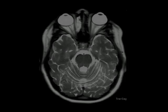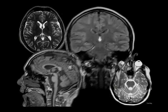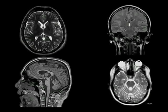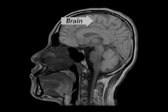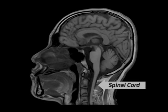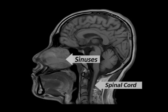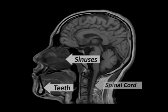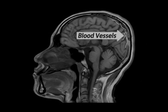These are MR images of the brain. They're astoundingly clear and detailed. Here, in addition to the brain, we can see the spinal cord, sinuses, teeth, and even the blood vessels.